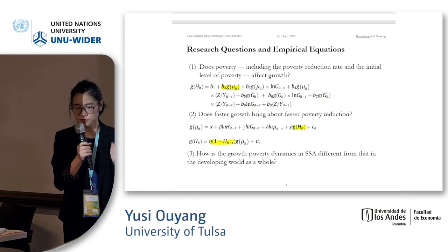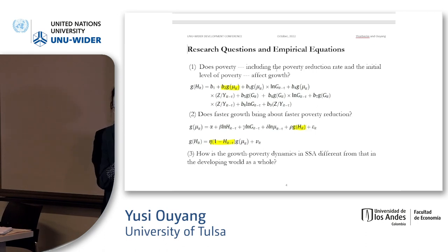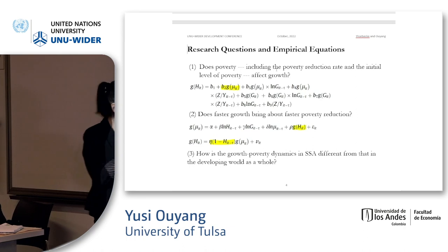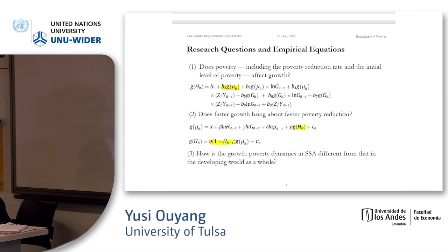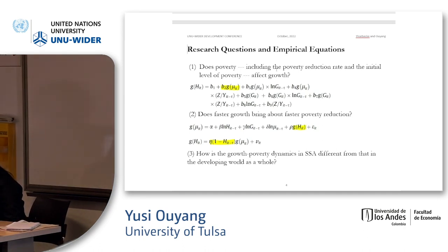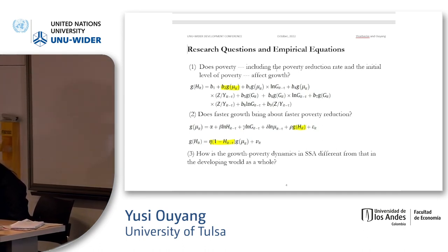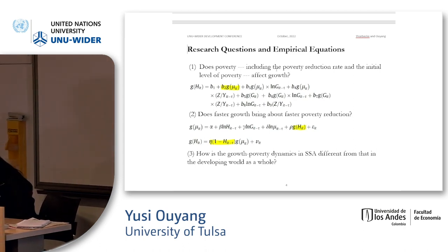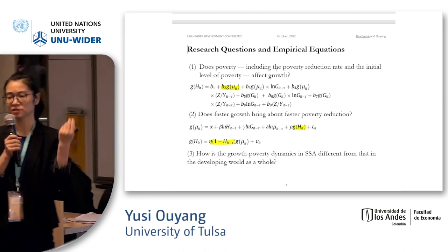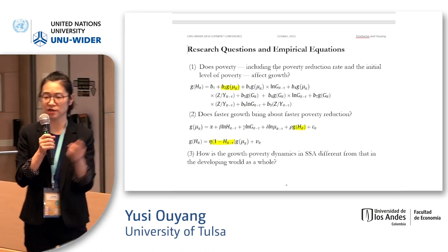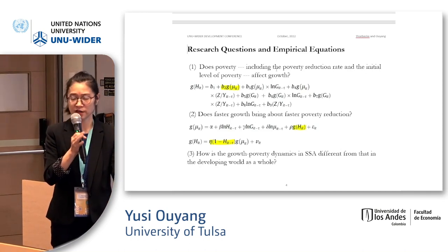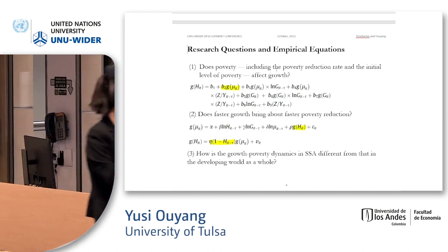Being aware of the model's limitations, the second question is whether faster economic growth brings about faster poverty reduction — we look at both directions: from income growth to poverty reduction, and from poverty reduction and initial poverty to income growth. Finally, we compare results between Sub-Saharan African countries and the entire developing world to see if there is a difference in poverty-growth dynamics.